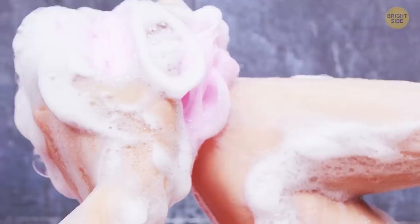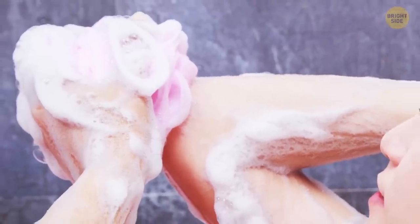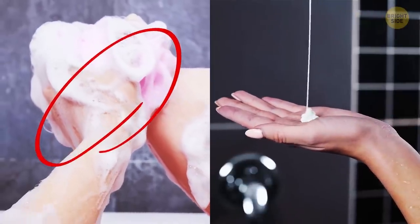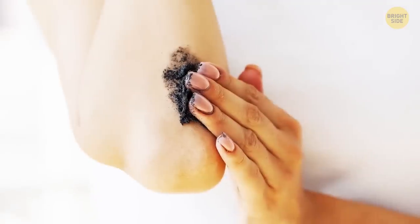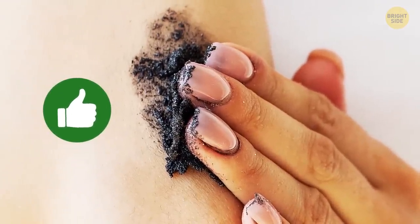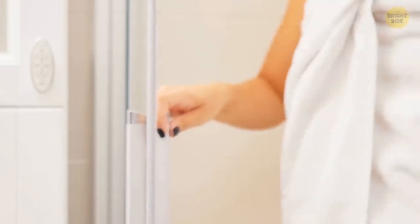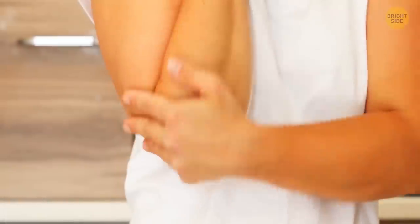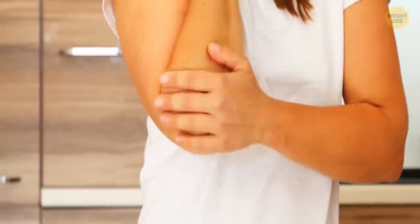While taking a shower, lather up and wash your elbows specifically, then add some moisturizer on top. After that, exfoliate them with a special body wash or a sugar scrub. Then, dry yourself with a towel, and after a few weeks of such care, you'll probably notice your elbows getting lighter.